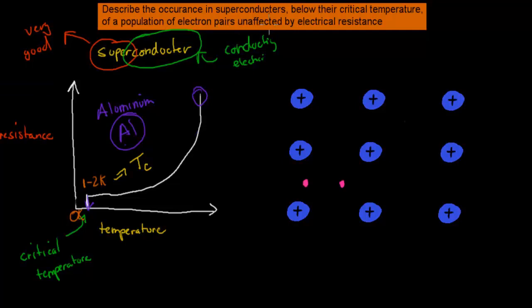There's a pair of electrons unaffected by electrical resistance. We can see that by the graph because after that point, it doesn't matter what the temperature is, we have no resistance anymore. I'm going to cover these pairs of electrons much more in the BCS theory video.